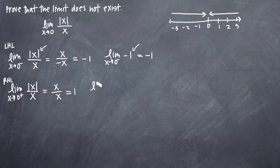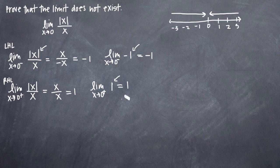We can call that the limit as x approaches zero from the positive or right-hand side of one. Plugging zero into this simplified function, we can't even plug in zero — it's always just going to be one. This shows us that we do in fact have a right-hand limit and that it does exist.